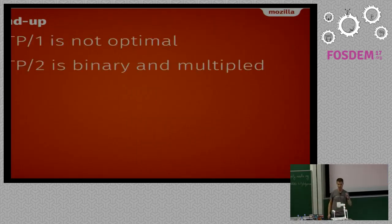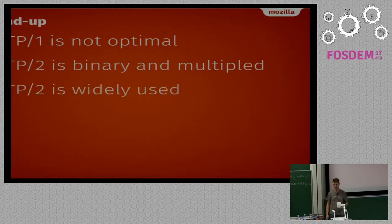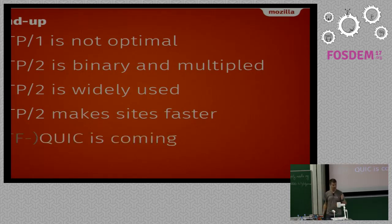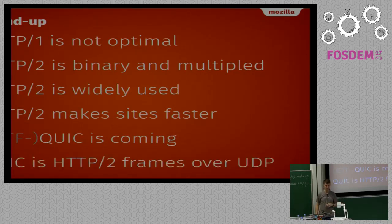A fast roundup: H1 wasn't really optimal, and H2 is binary. Multiplex fixed a lot of these problems. It is getting widely adopted and used everywhere, especially by volume in browsers. It makes sites faster. QUIC is coming - really soon, maybe. Basically H2 frames over UDP - that's the summary of everything you need to know.